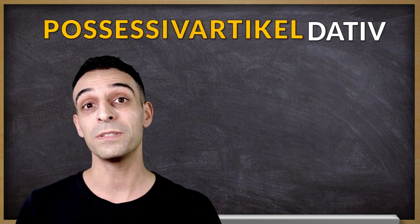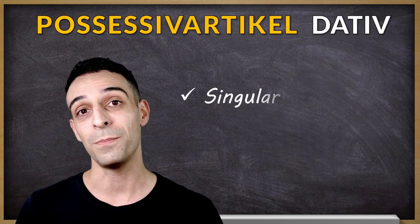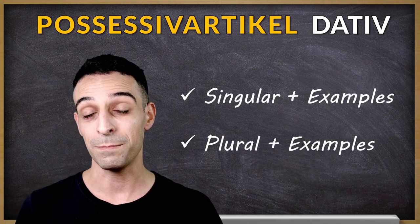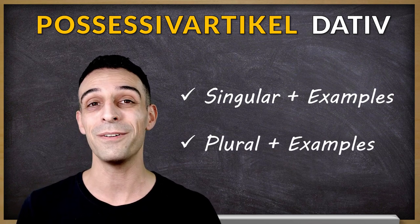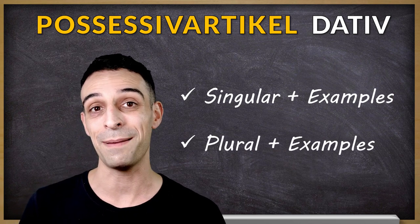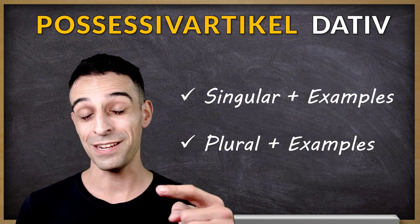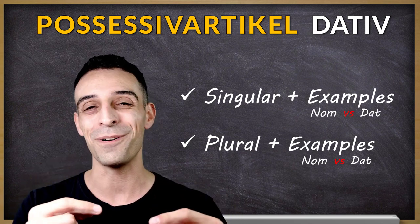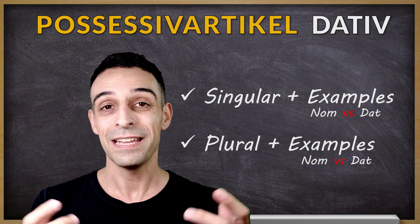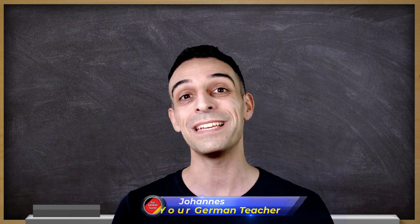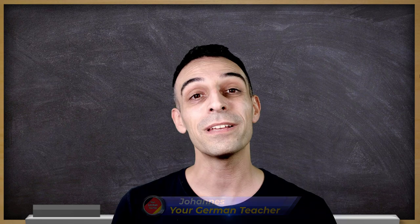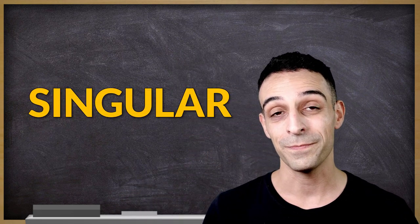The first part is about the singular forms and the second part about plural. In both parts, I will have example sentences in nominative and in dative to compare the forms. In case you are new to this channel, mein Name ist Johannes. And now we can start with the singular forms.